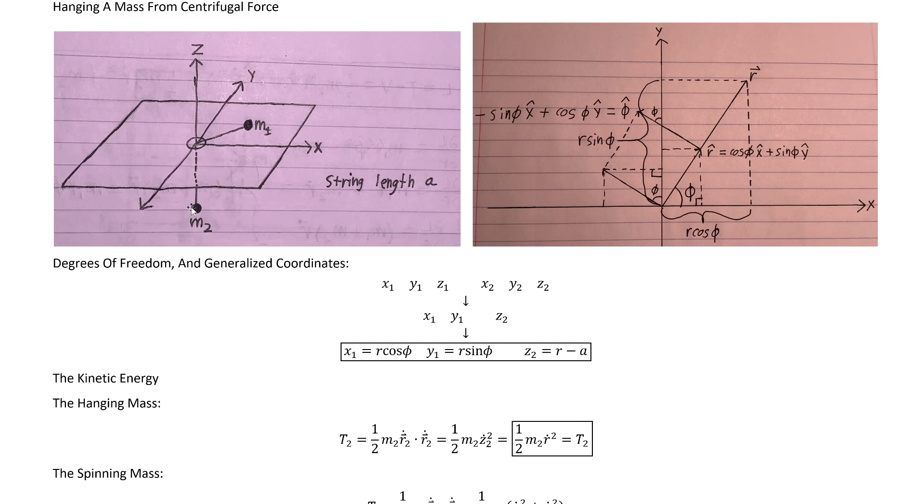Specifically, we see that the Z2 coordinate of M2 here will be the radius that this M1 has extended out to, minus the length of the string, which we've decided to call A. Written out, we have this restriction.